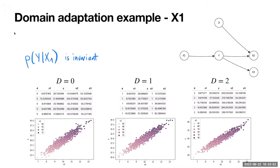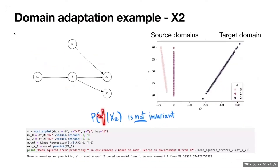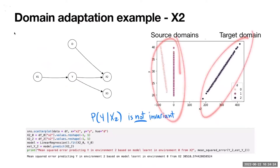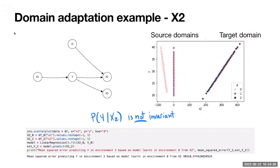Now looking at Y given X2: these are very different lines for each domain. If I fit a linear regression in the source domains and use it to predict the target domain, I get an arbitrary large error — in this case, 30,000. So the distribution of Y given X2 is not invariant across domains.